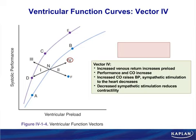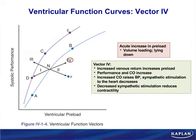Vector 4 represents increased preload causing increased performance with a reflex decrease in sympathetic outflow. For Step 1, what causes increased preload? The opposite of what reduces it: volume loading, lying down (standing decreases preload, lying down increases it), and going into space — zero gravity is well known to increase preload.